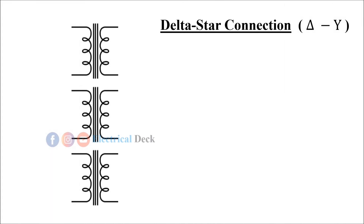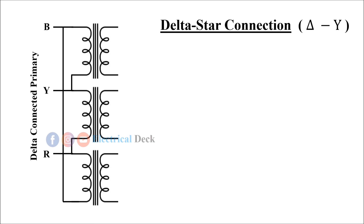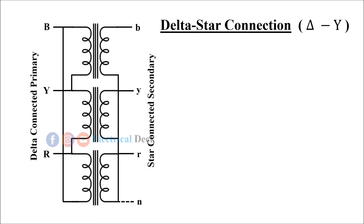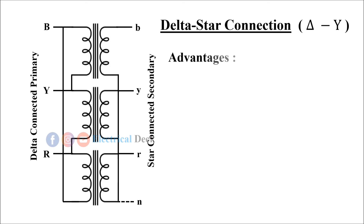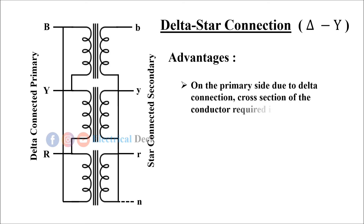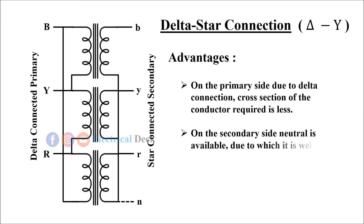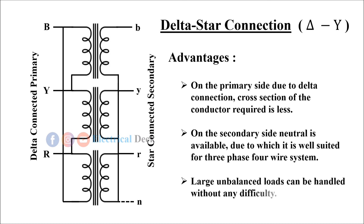In delta-to-star connection, the primary is connected in delta and the secondary is in star. This type of connection is used to step up the voltage, that is, at generating stations. The advantages are: on the primary side, due to delta connection, the cross-section of the conductor required is less. On the secondary side, neutral is available, making it well suited for a three-phase four-wire system. Large unbalanced loads can be handled without any difficulty.